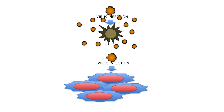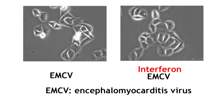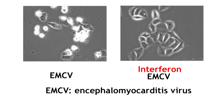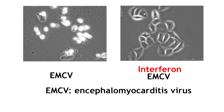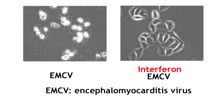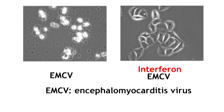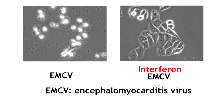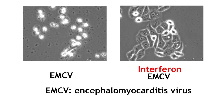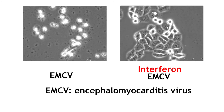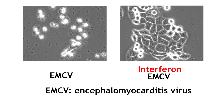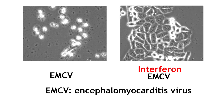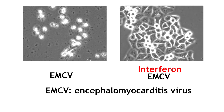Here are two videos of virus-infected cells. HeLa cells are infected with encephalomyocarditis virus, EMCV, for 24 hours. All the cells die within 24 hours. However, if the cells are pre-treated with interferon before being infected with EMCV, the cells do not die. Instead, they proliferate.